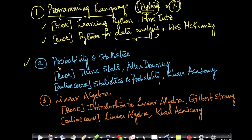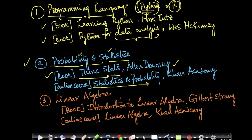The second very important topic is probability and statistics. Some of you may panic, but it need not be hard. There is a very nice book called Think Stats by Allen Downey — an O'Reilly textbook — where the author introduces all concepts in probability and statistics using real-world data. There is also an online course called Statistics and Probability by Khan Academy, which is one of my favorite resources because the explanation of concepts there is terrific.